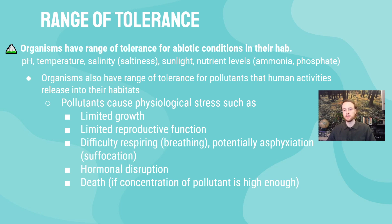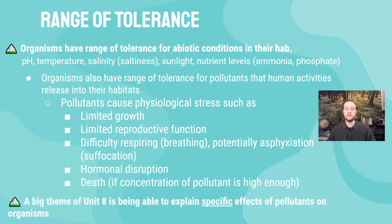Organisms could also have difficulty breathing or respiring, potentially leading to suffocation if oxygen levels are low enough. Hormonal disruption from endocrine disruptors can throw off growth, development, and reproduction. An organism may die if the pollutant is lethal and reaches a high enough dosage — the solution to pollution is dilution — so a pollutant typically has to reach a fairly high concentration to cause death. The key takeaway is to identify specific effects of pollutants on organisms rather than simply stating they'll die.